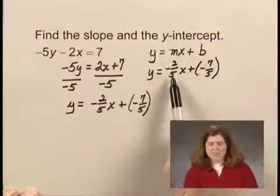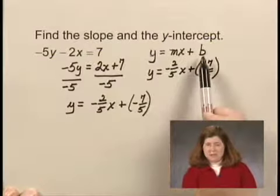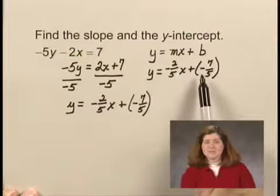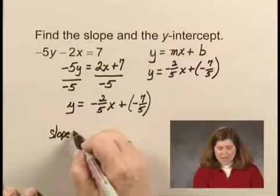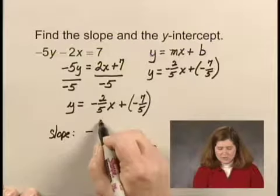And we can see that m is -2/5 and b is -7/5. That tells us that the slope, which corresponds to the m, is -2/5.